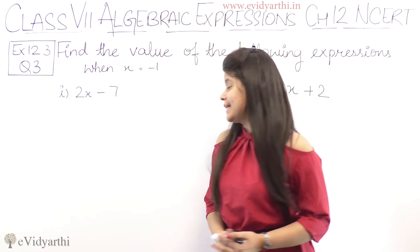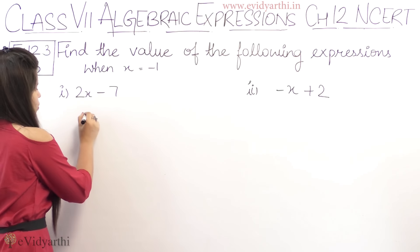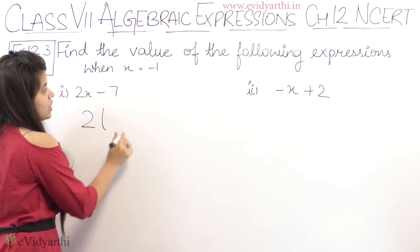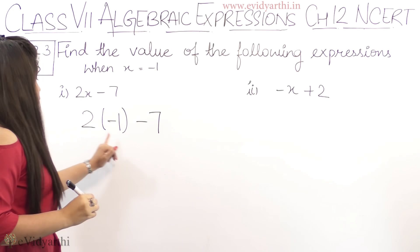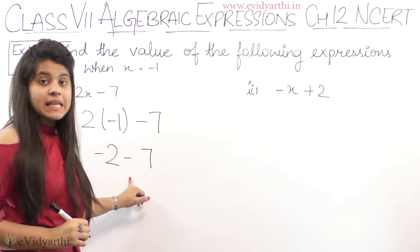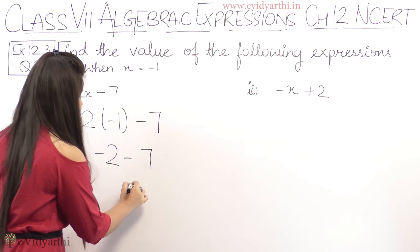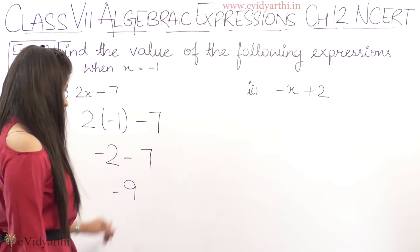So let's start. First part is 2x minus 7. So 2 times x value minus 1 minus 7. So 2 into 1 is 2, minus 2 minus 7, minus minus plus, so minus 2 plus 7 is 9. So the answer is minus 9 because sign minus ka hai.